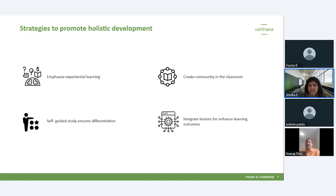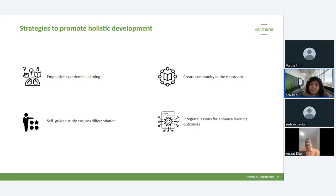Another strategy is to integrate lessons for enhancing learning outcomes — teaching different topics together. For example, you can teach soil in both science and geography. You can bring different subjects together to teach a topic — for instance, teaching baking as part of both food science and chemistry, like how things ferment. Bringing this intersectionality into subjects provides a broader perspective for students to understand and remember a topic for a longer duration.